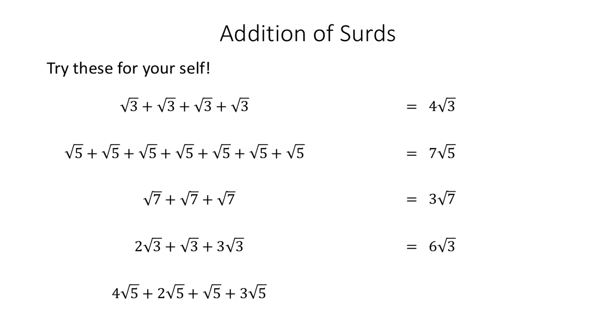In the last row, 4 root 5's plus 2 root 5's plus 1 root 5 plus 3 root 5's means altogether gathered up I'd have 10 root 5's. And hopefully you can see there that the way they're gathered together isn't that dissimilar from what you learned when you were dealing with algebra.